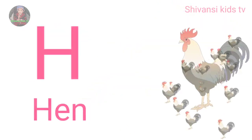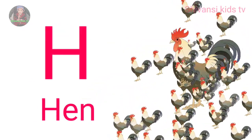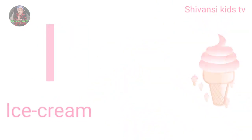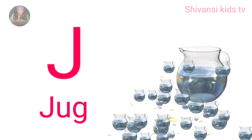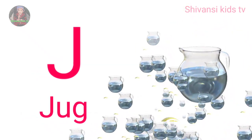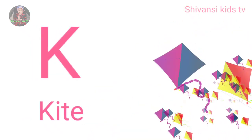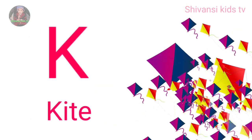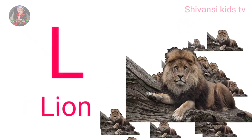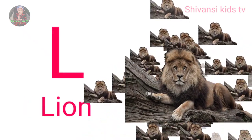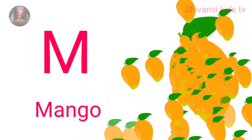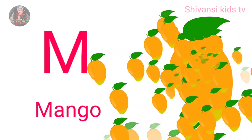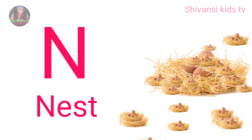H for hand, I for ice cream, J for jug, K for kite, L for lion, M for mango, N for nest.